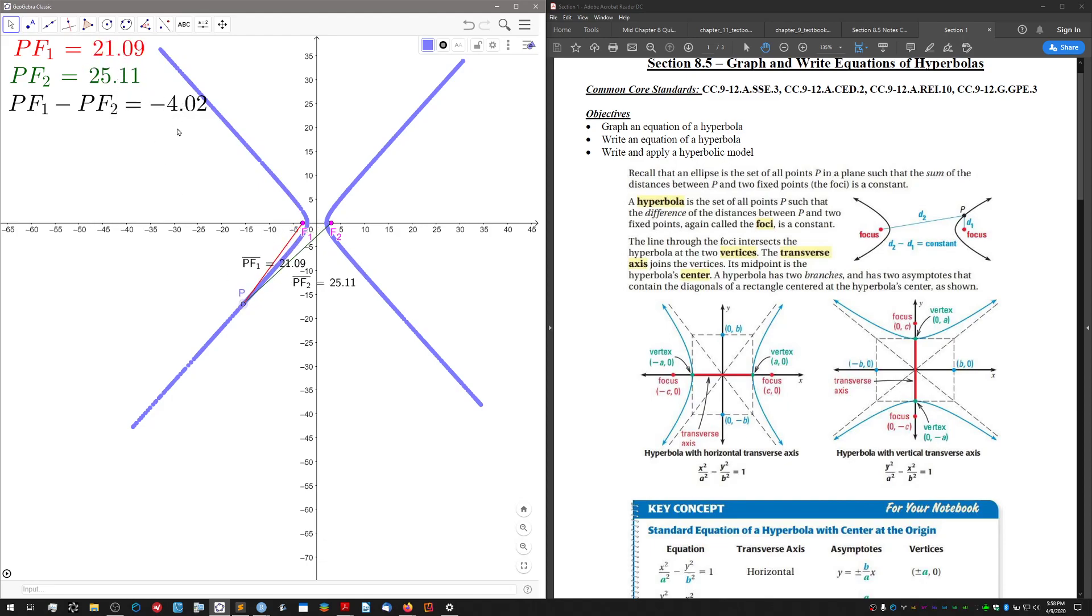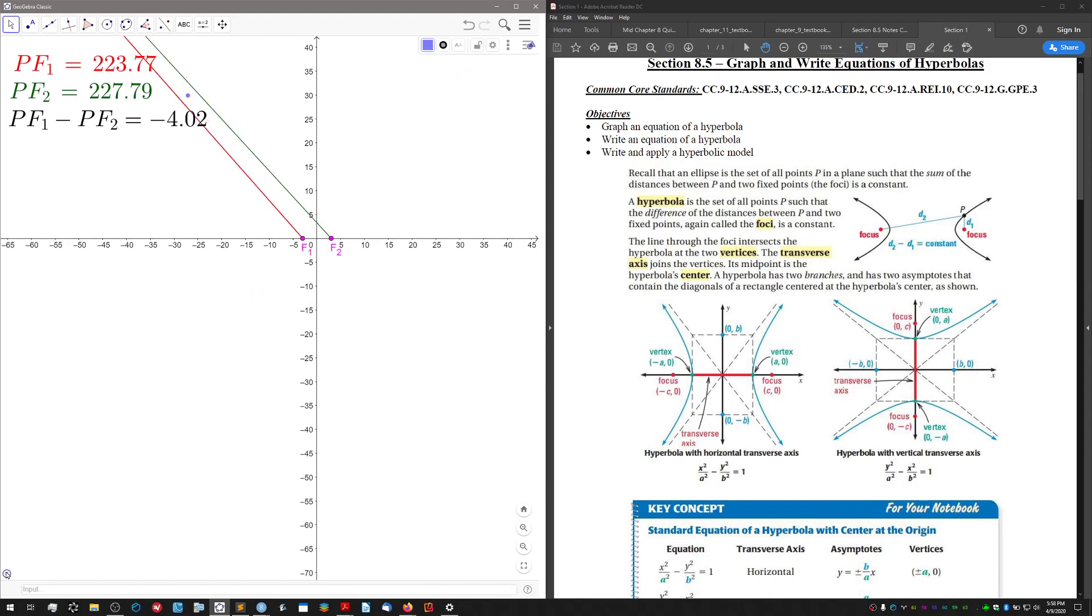Usually what I do for students is animate it by clicking play. But when you animate it, it doesn't really draw a nice hyperbola. So what I usually do is just draw it myself by doing this. You can see the more points I draw, I form a hyperbola like this.